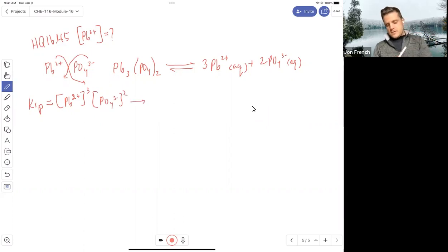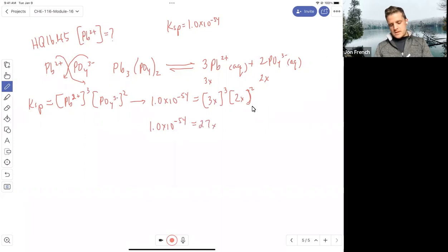I'm going to plug in X now for those. So lead would be 3X, phosphate would be 2X. So I know my Ksp, my Ksp is 1 times 10 to the minus 54. They told us that at the start. That's going to equal 3X cubed times 2X squared. So I get 1 times 10 to the minus 54 equals 27X cubed times 4X squared. Multiply those two together, and I get 108X to the fifth.